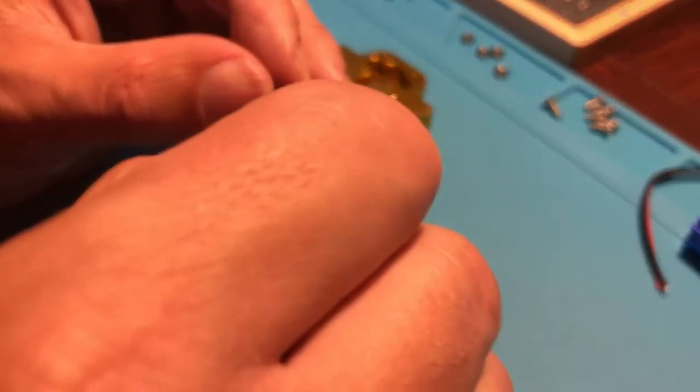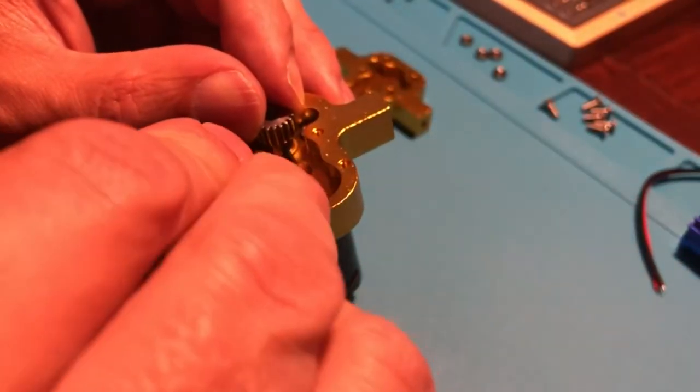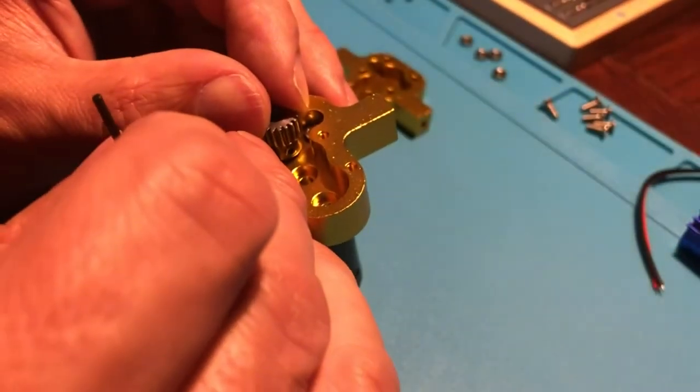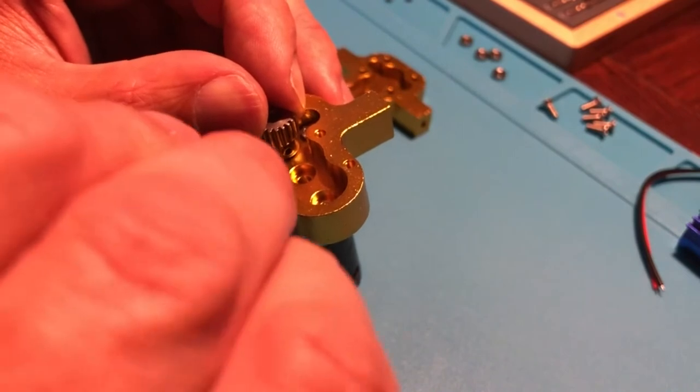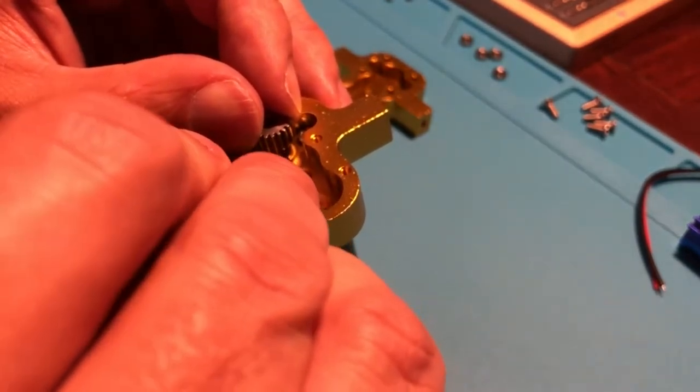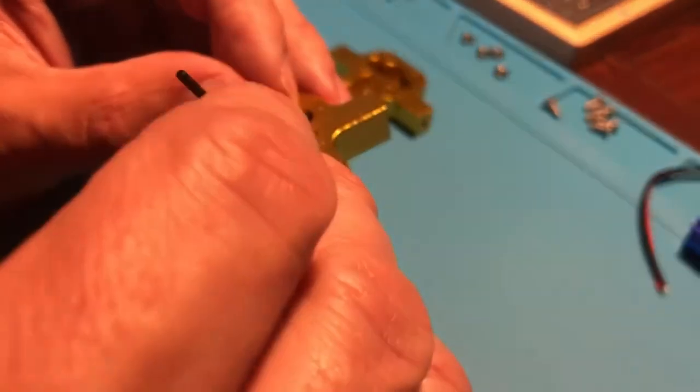Here is the first part of the project video converting the JJRC Q65 to a more capable RC toy. What we have here is the Juru AV metal transfer gearbox.